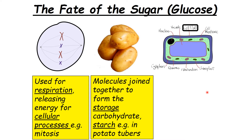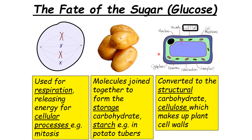The third option for glucose is conversion into a structural carbohydrate. Cell walls contain a particular carbohydrate called cellulose, so the glucose can be converted into cellulose, which is used to make up plant cell walls.